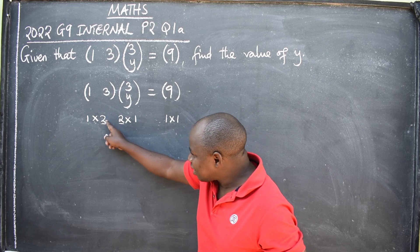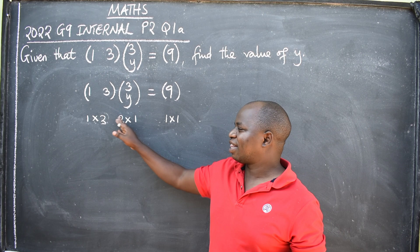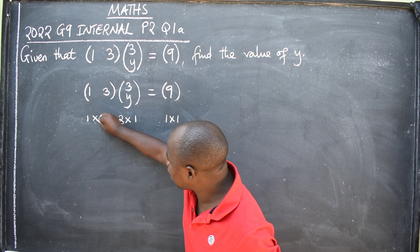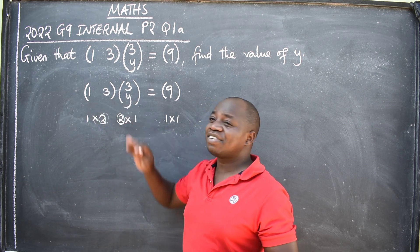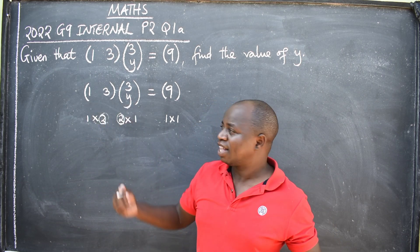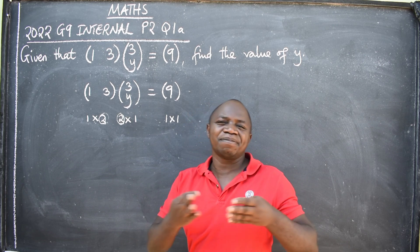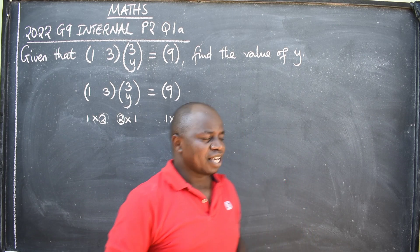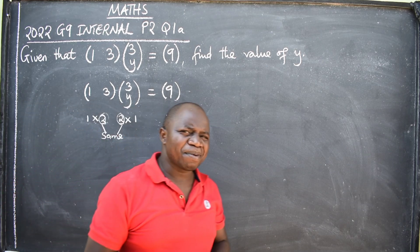So, here always, this number and this must be the same. Like the way it is here. I've got a two here, also a two here. Therefore, the two matrices can be multiplied. This is what it's going to tell me. If the matrices can be multiplied or not. So, here I'm saying they should be the same, these two.